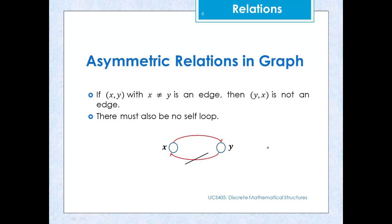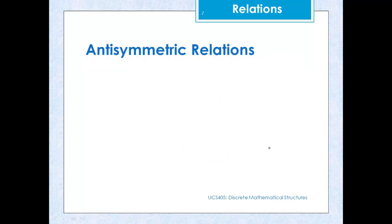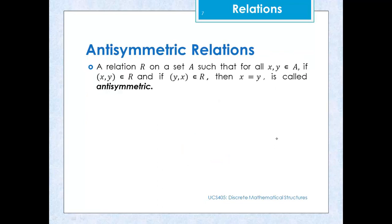Let us move on to the next property: antisymmetric relation. If we have a relation R on a given set A, then R is antisymmetric if whenever (x,y) belongs to R and (y,x) also belongs to R, then x must equal y. Otherwise the relation is not antisymmetric.